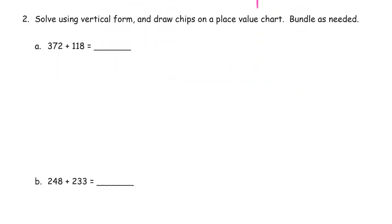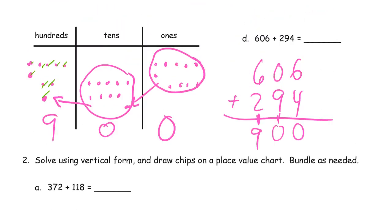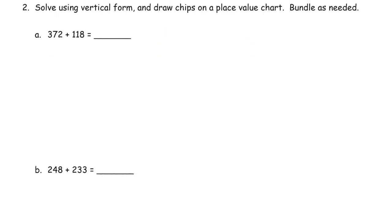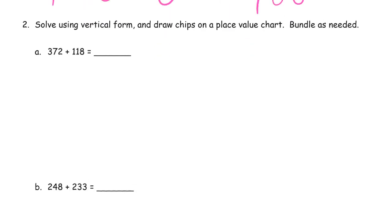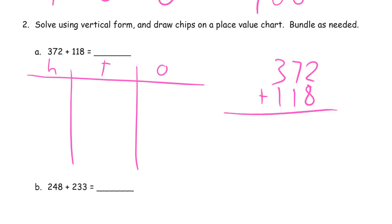Solve using vertical form and draw chips on a place value chart. Bundle as needed. Same thing as we've been doing, only now we have to draw our own hundreds, tens, ones chart. I'm going to do it vertically first. Start with the ones digits, 2 plus 8, ten. Got to compose a ten. Add it to the other ten, 7 plus 1, 8 plus 1 more, nine. And then our hundreds, 3 plus 1 is 4.